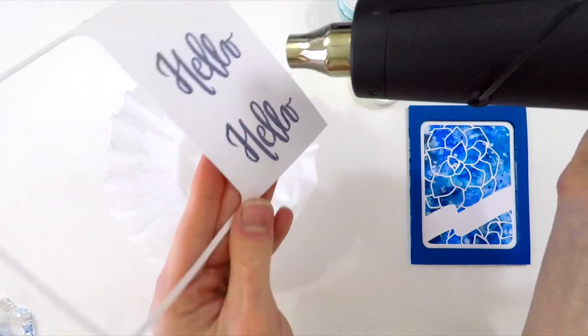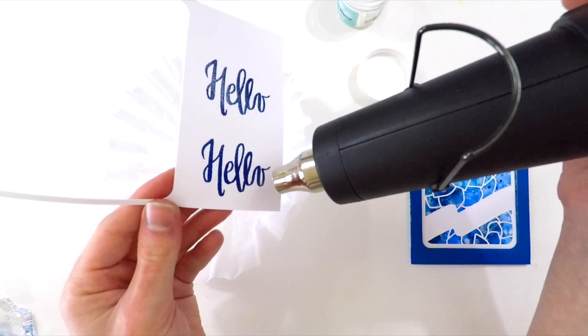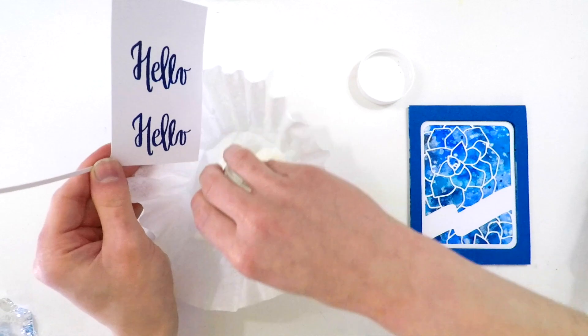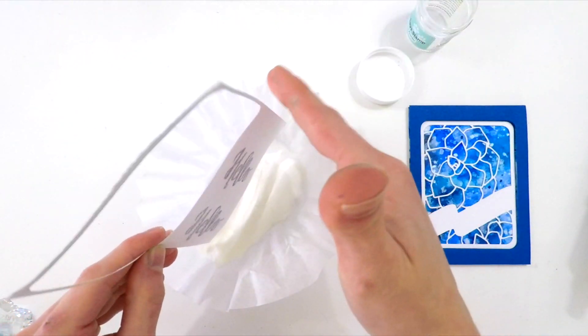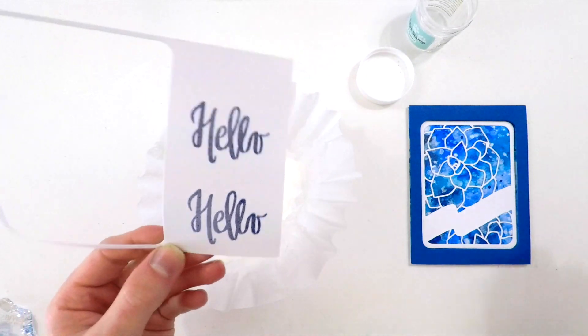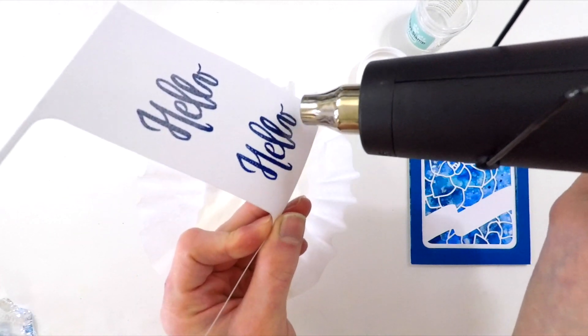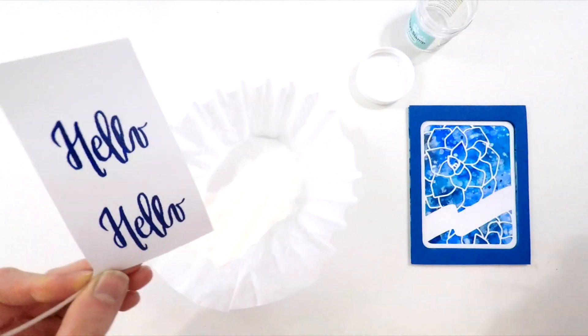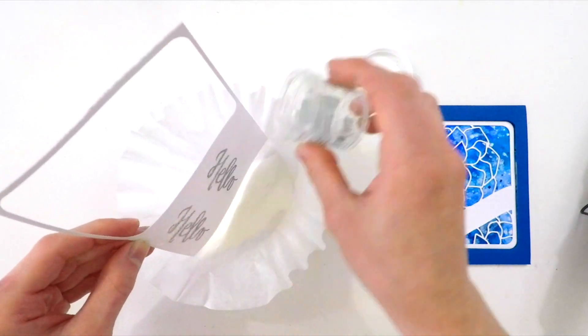This Altenew ink stays wet for a little bit, so I'm going to add some clear embossing powder to that sentiment. I'm going to heat set these, and once I've got those completely heat set and melted, I'm actually going to apply a second layer of embossing powder on top of these sentiments. I have to work very quickly because that embossing powder will only stick if the heat embossing is still warm. Once it's cooled off, it won't stick. So I very quickly added a second layer of embossing powder, heat set it, and then one more time I'm going to add a third layer of embossing powder.